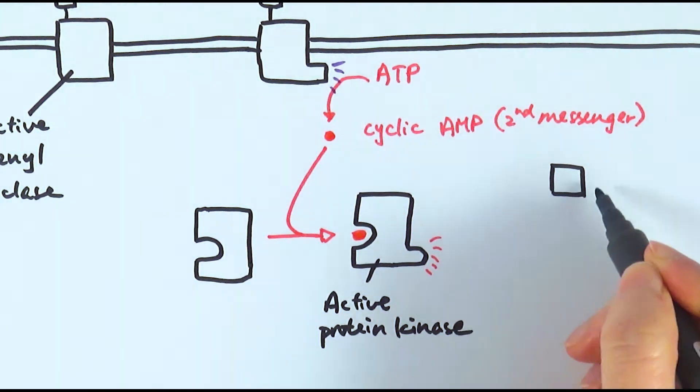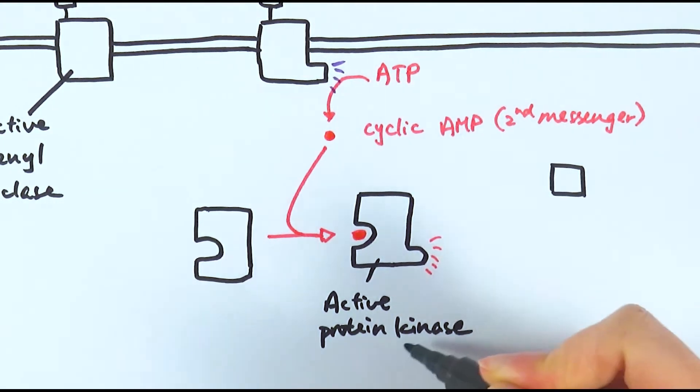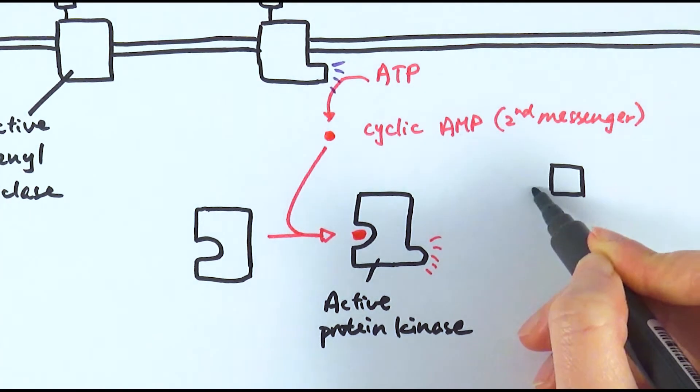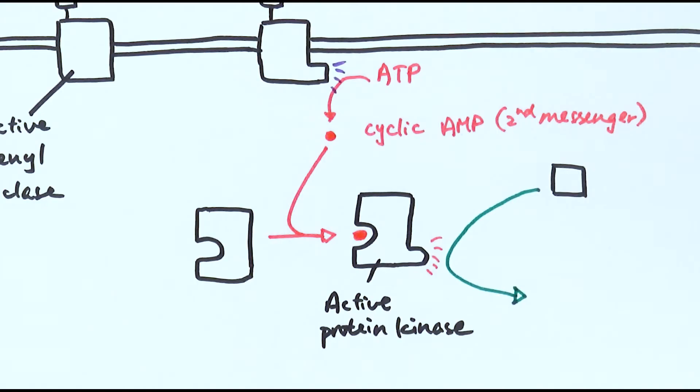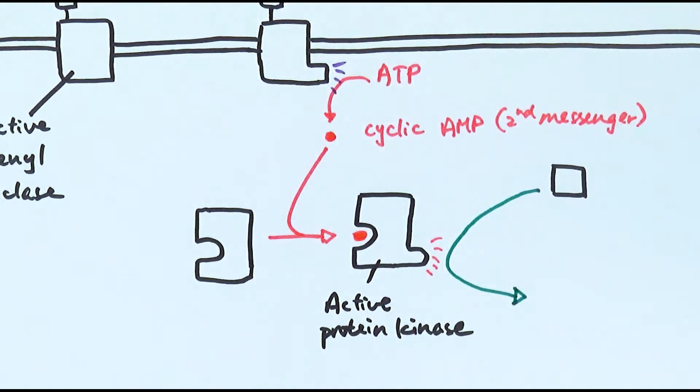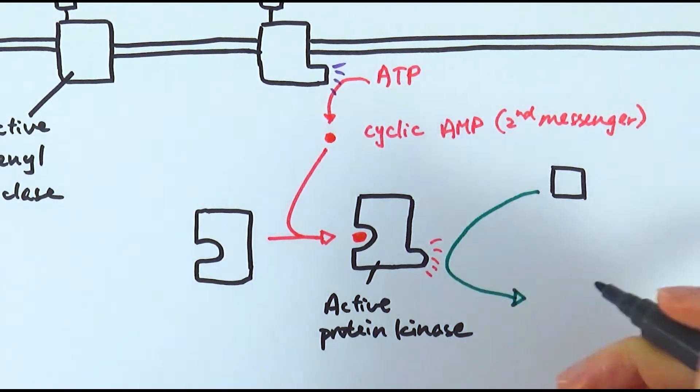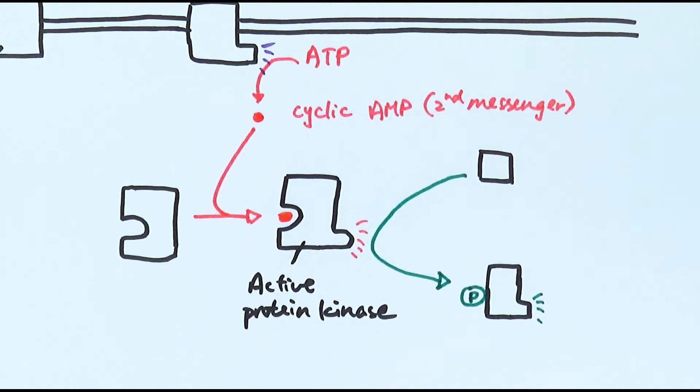For example here I've got an inactive enzyme. When the protein kinases are activated, they will be able to react to that enzyme or react on the enzyme causing them to become phosphorylated. Now this particular enzyme is now activated because it's been phosphorylated, and they can then go on to do various things.